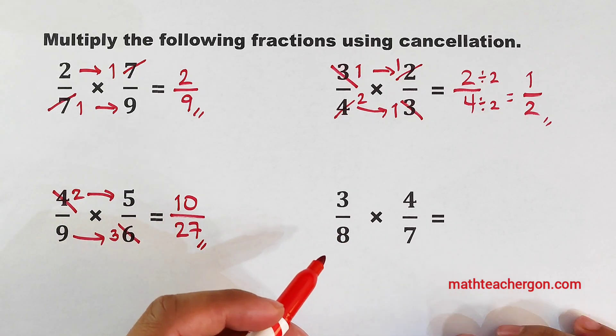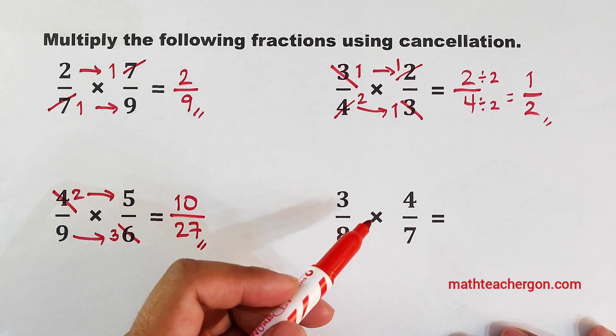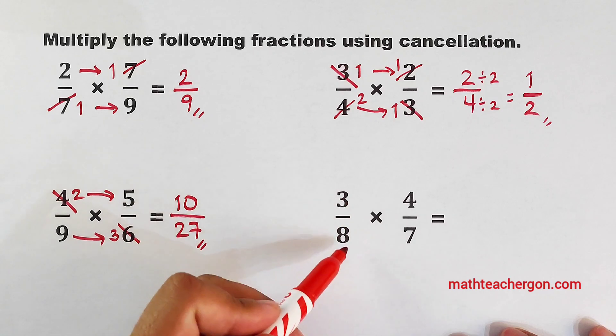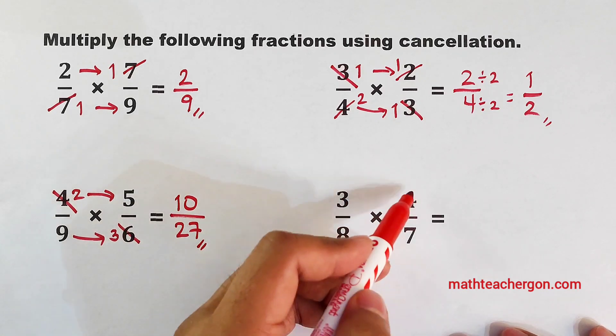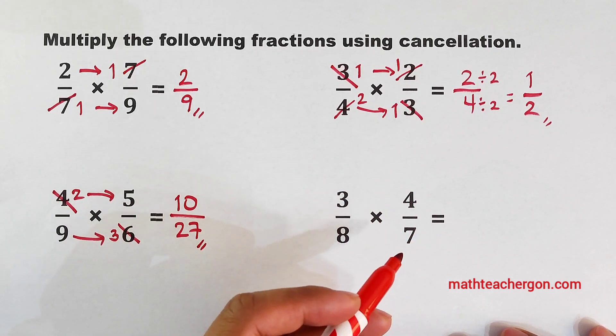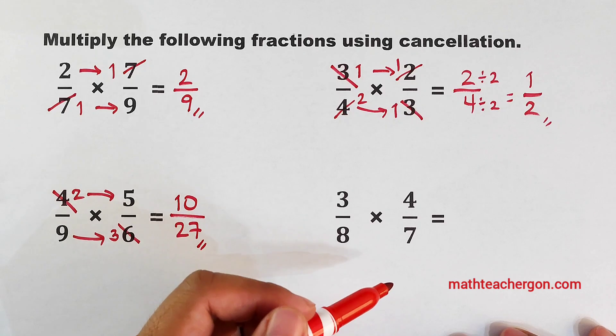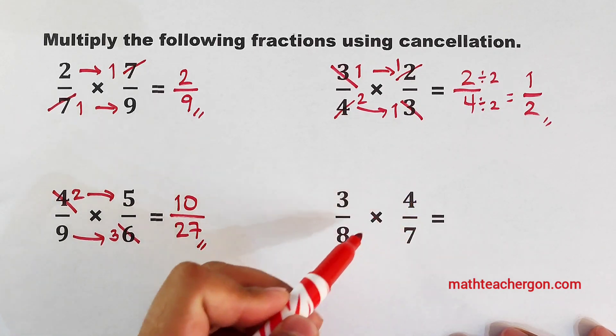Okay, let's continue. Now for 3 and 7, it's not possible. For 3 and 8, it's not possible also. For 4 and 7, it's not possible to cancel out. The only numbers that we can cancel out are 4 and 8.